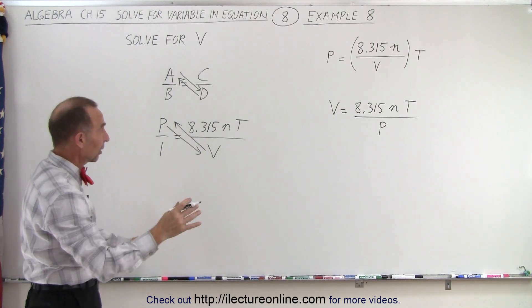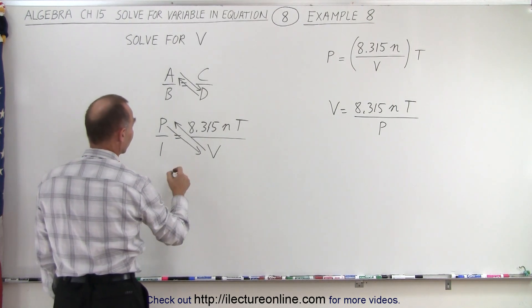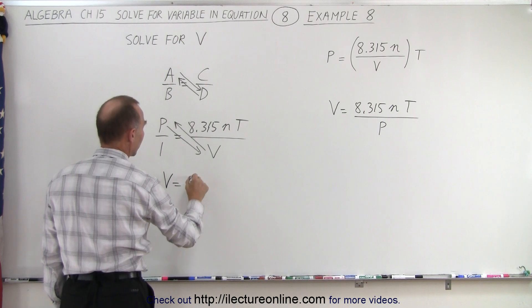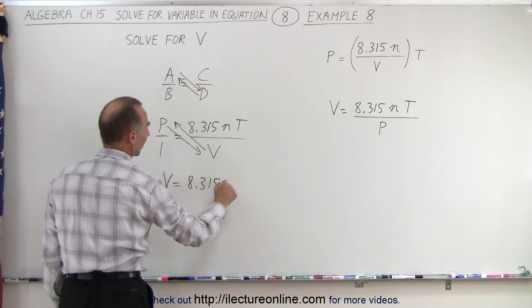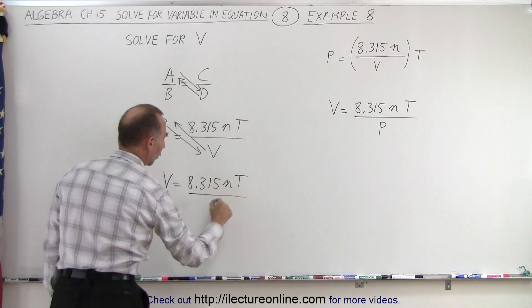And of course, we don't have to write v over 1. We can just get rid of the over 1. And so that simply becomes v is equal to 8.315n times t, all divided by p.